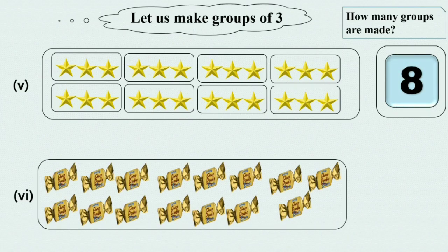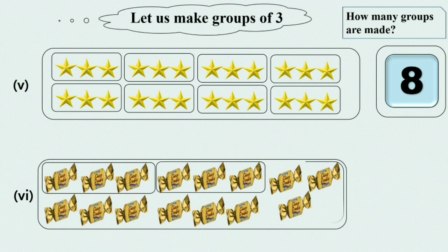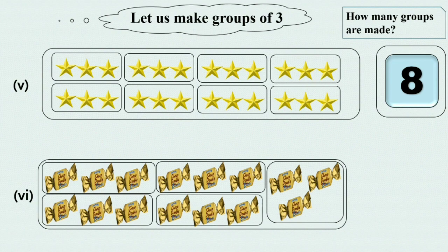Now we have 15 toffees. We have to make groups of 3. Now we will start making groups of 3. Here is group 1, group 2, group 3, group 4 and group 5. We have 5 groups of toffees. We will write 5 in the box.